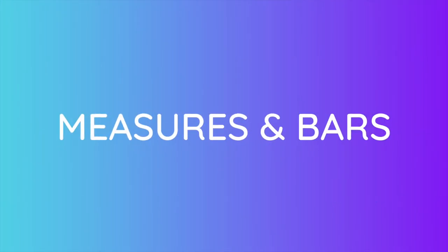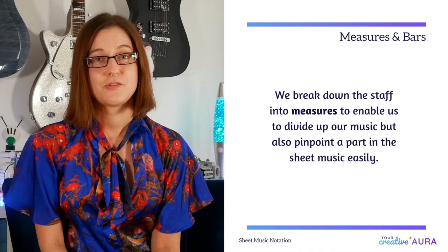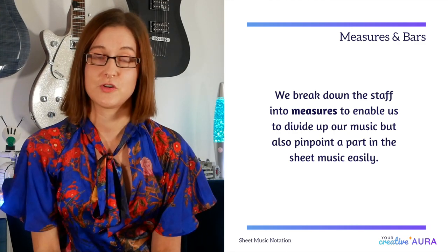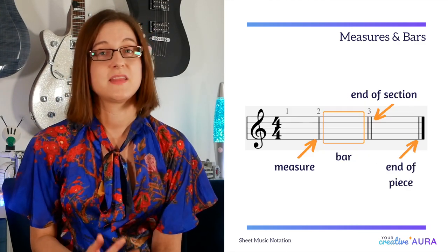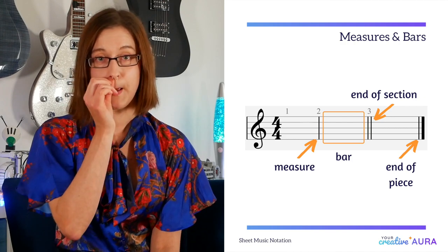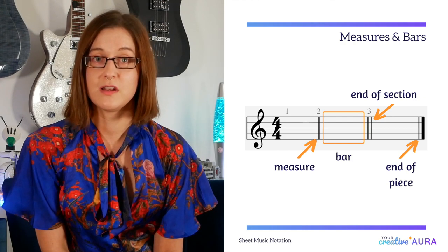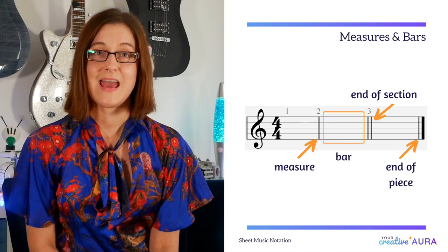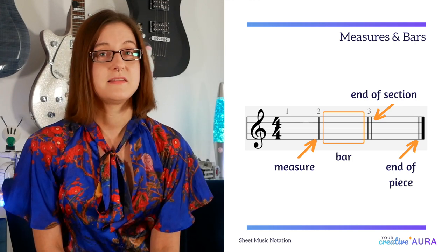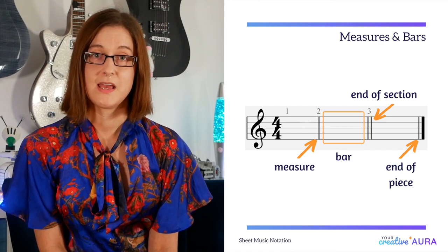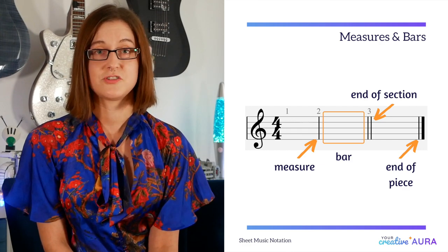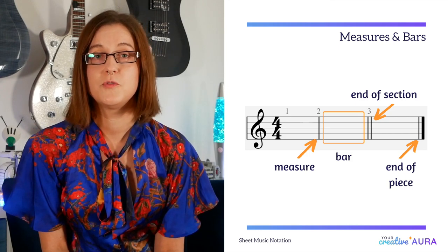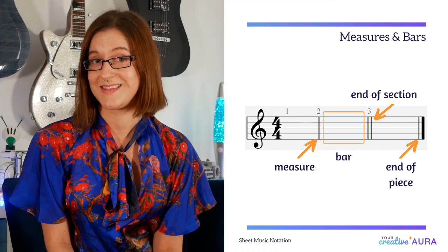Measures and bars. To make music easier to read and navigate, we break it down into measures. A thin singular vertical line represents different measures, and these are numbered throughout the sheet music. A thin double vertical line means it's the end of a section, such as the end of a verse or a chorus. A thin then thick vertical line means it's the end of the piece of music. The space in between each measure is called a bar, and this is where your notes you use to play or to pause. We'll go through music notes in the next video.